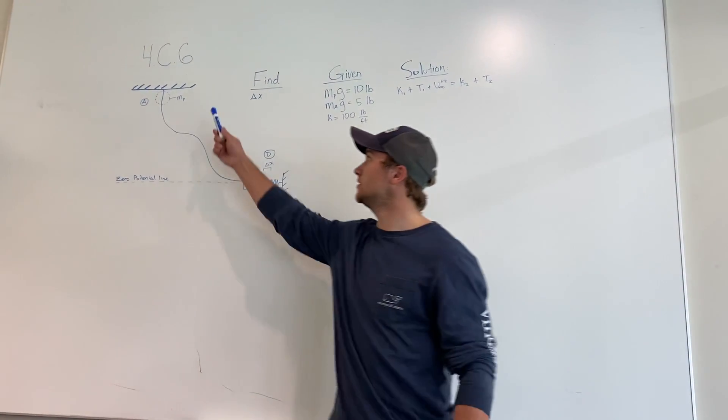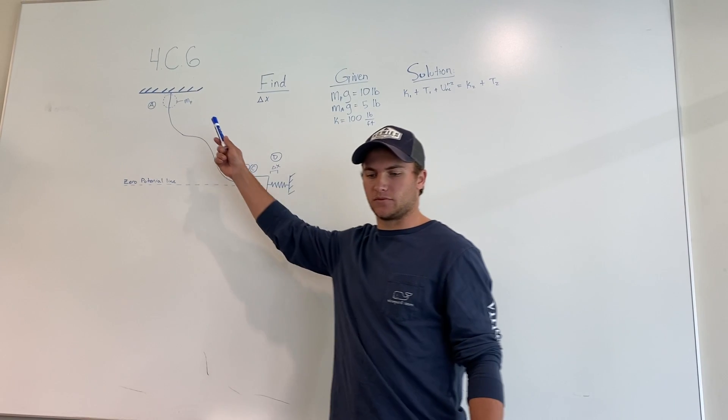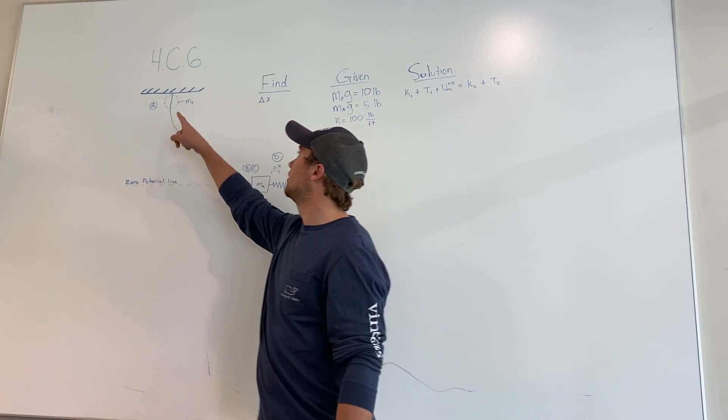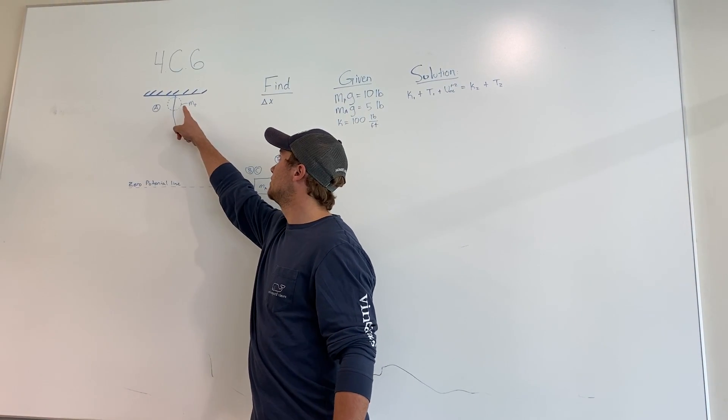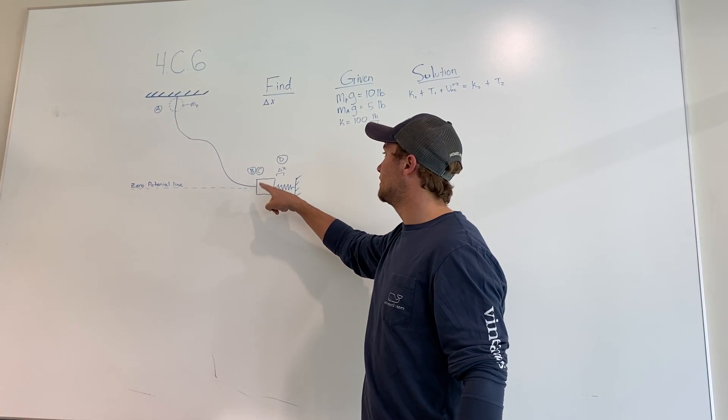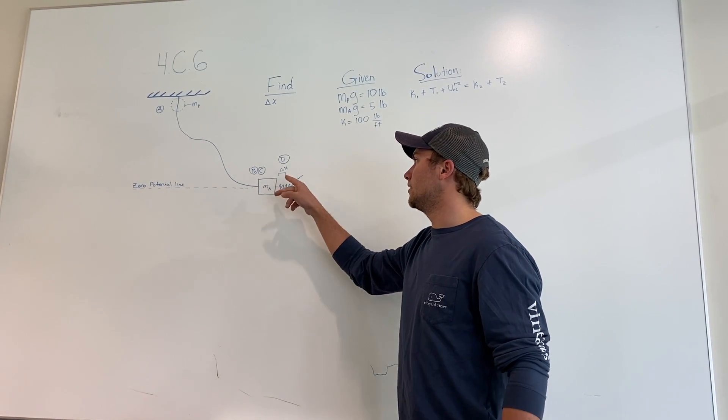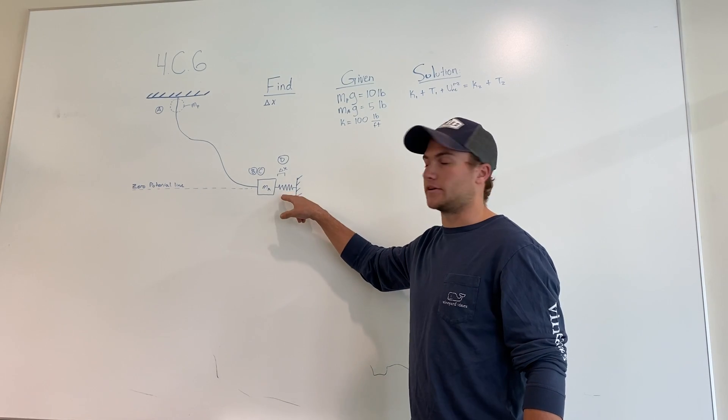Okay, so this is problem 4C6. This is a problem where there's a mass P that travels on a path and hits mass A.